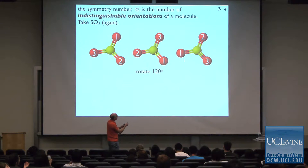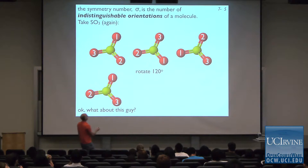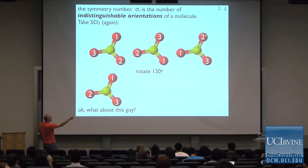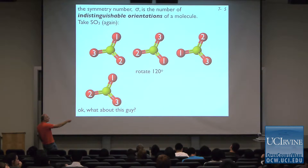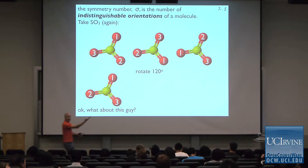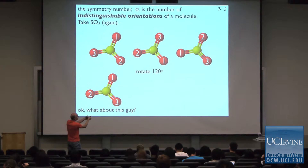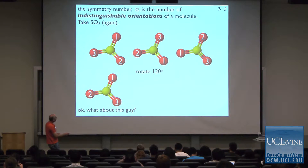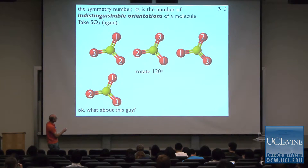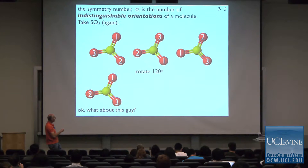What if I take this molecule and flip it over? I flipped it so that oxygen 2 is down here now, oxygen 1 is up here, but oxygen 3 didn't move. I took the molecule and flipped it over. Does this flipped orientation look exactly like the original? It does — the oxygens are all in the same place — but this is not the same as the three rotated orientations.